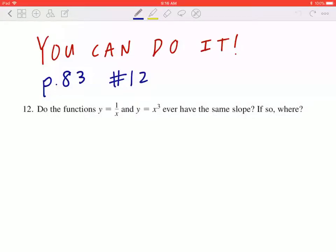Hi, everyone. Let's take a look at number 12 on page 83. Do the functions y equal to 1 over x and y equal to x cubed ever have the same slope? If so, where?